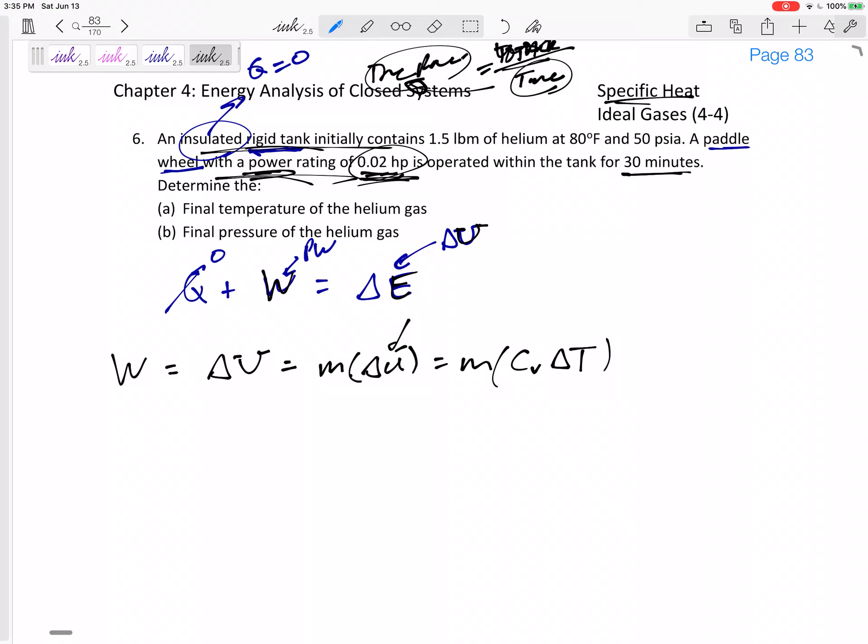Okay, what's the work done by the paddle wheel? 0.02 horsepower times 30 minutes. I'm going to leave a lot of room for a unit conversion right here, because I don't think the units on the left-hand side are going to equal my units on the right-hand side. What do I have on the units on the right side? I have 1.5 pound mass.